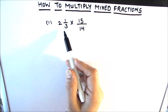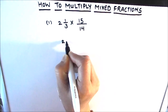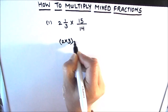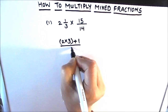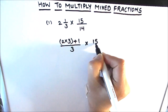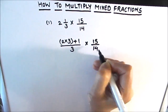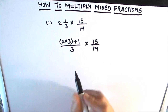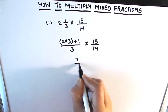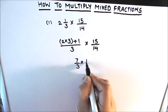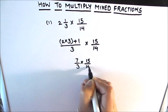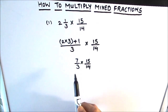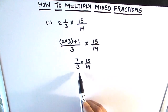To multiply the two fractions, we first need to convert the mixed fraction into an improper fraction. That's going to be 2 times 3 plus 1, divided by 3, times 15 upon 14. So 2 times 3 is 6, and 6 plus 1 is 7, giving us 7 upon 3, times 15 upon 14. The mixed fraction is now converted into an improper fraction.